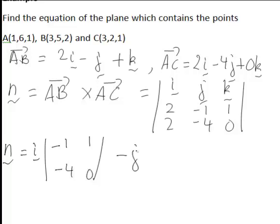Minus j times the subdeterminant when we cover the first row and second column. That is 2, 1, 2, 0. And then plus k times the subdeterminant when we cover the last column and the first row. So the subdeterminant 2, negative 1, 2, negative 4.